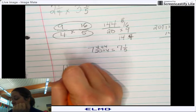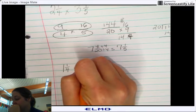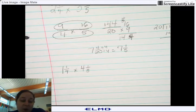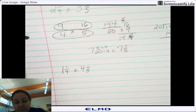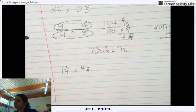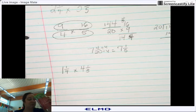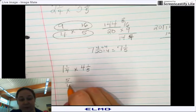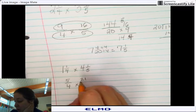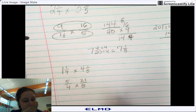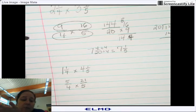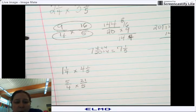Try this one. 1¼ times 4⅕. 5/4 times 21 over 5.